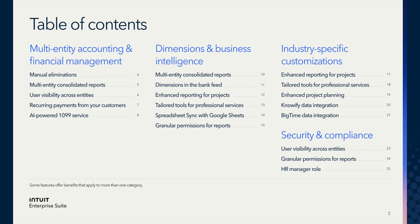As you can see, these are quite broad features and enhancements, but they are divided into four main buckets: multi-entity accounting and financial management, dimensions and business intelligence, industry-specific customizations, and security and compliance. Today, we're going to focus more on the multi-entity side of things. So let's begin with our core improvements to multi-entity accounting and financial management, and I'll walk you through it.